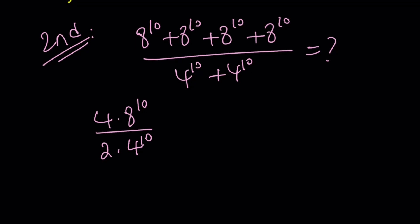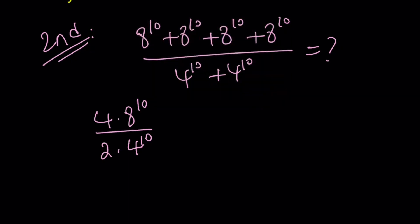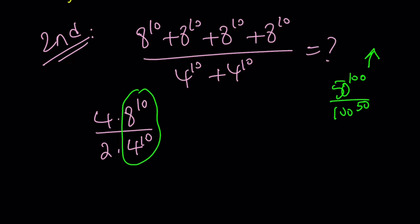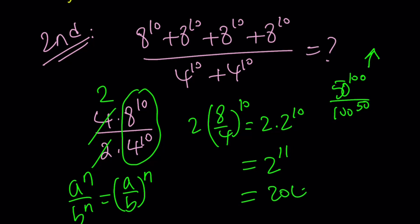But instead of using powers of 2, I'm going to proceed a little differently — same idea as a problem we've done recently, I think it was 50 to the power of 100 divided by 100 to the power of 50. We can group these together because they have the same exponent, and 2 and 4 cancel out. We can write this as 8 over 4 to the 10th power, because of the property: A to the N divided by B to the N equals A over B to the power of N. And now 8 over 4 is 2, so this is 2 times 2 to the 10th power, which is 2 to the power of 11, equal to 2048.